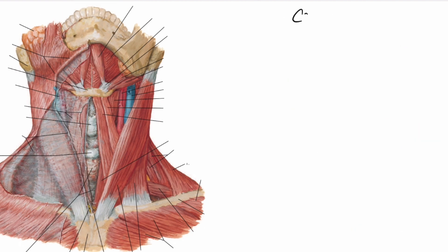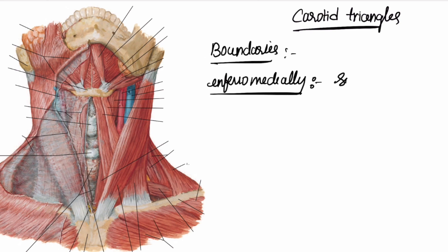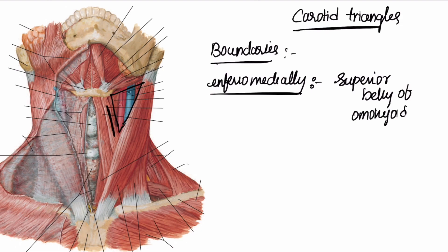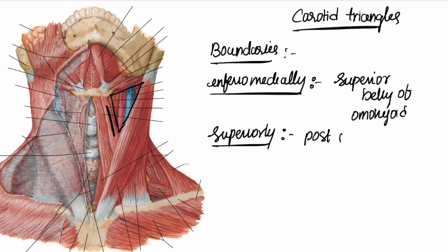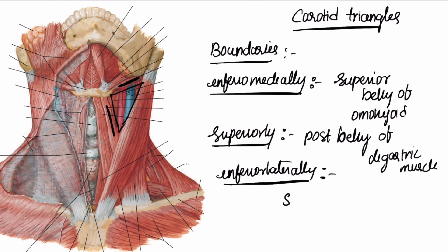Now let us look at the carotid triangle and its boundaries. Inferomedially, we have the superior belly of the omohyoid muscle. Superiorly, we have the posterior belly of the digastric muscle. Inferolaterally, we have the anterior border of the sternocleidomastoid muscle.